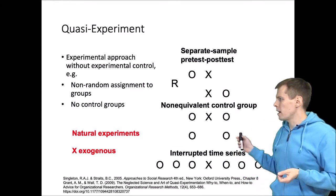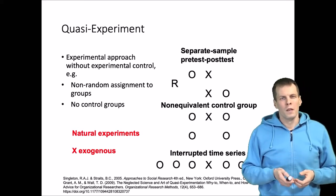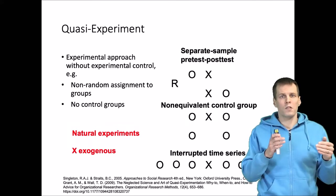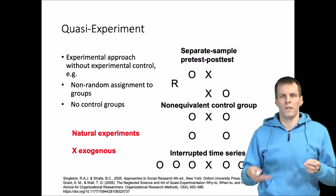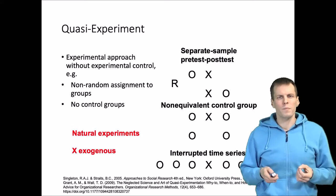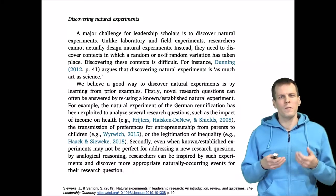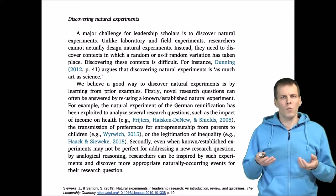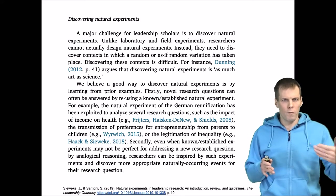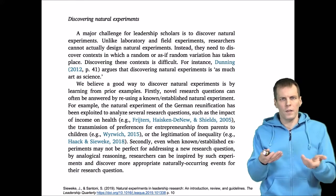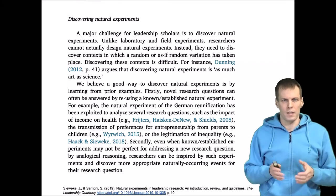With natural experiments, the process is not about design as much as it is about discovery. When you do a standard experiment you start with a research question, design the treatment and control conditions, and run the experiment. With natural experiments, the typical approach is to go and try to discover sources of natural variation in the X that you're interested in — variation that is hopefully exogenous, or sufficiently so that we can apply quasi-experimental techniques and the associated data analysis methods.